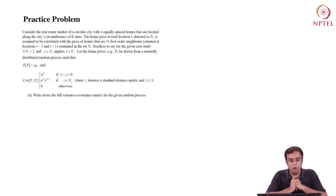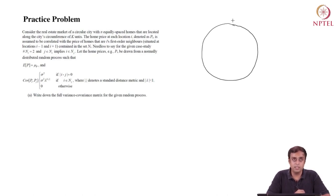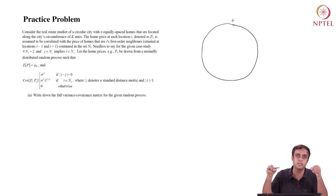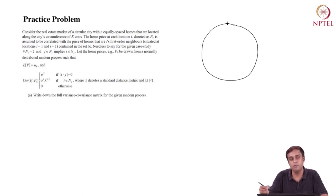Consider a real estate market for a circular city with equally spaced homes located along the city circumference of K units. I am going to draw a circle. We have N equally spaced homes; the circumference of this circle is K. There are N homes equidistant from each other, so homes are placed on this circle at a distance of K by N along the circumference. Let us call the first location as location 1, and going in the clockwise direction, I keep adding a location for a home every K by N units apart.